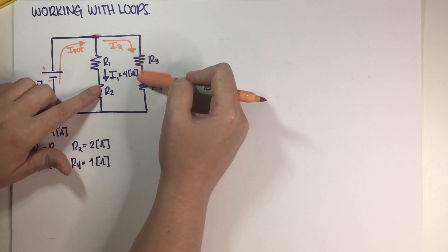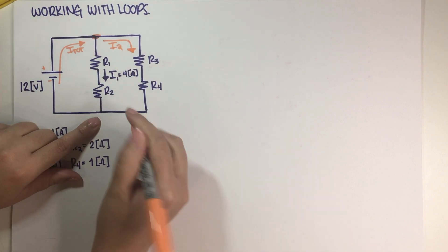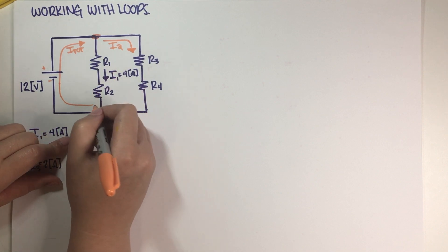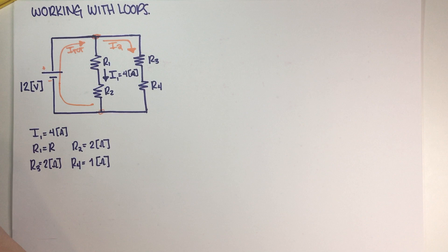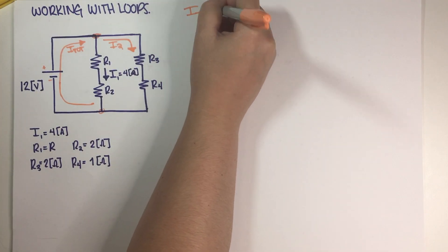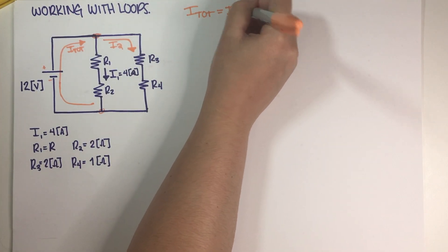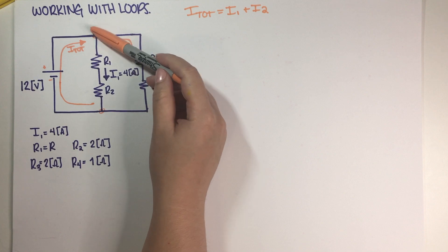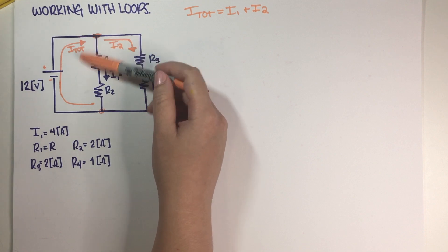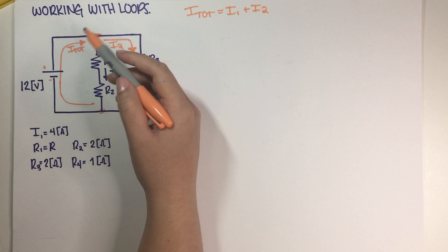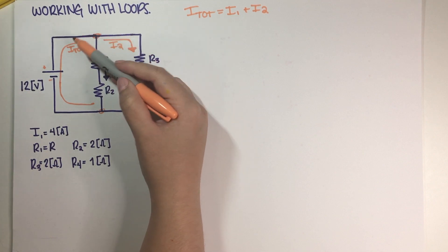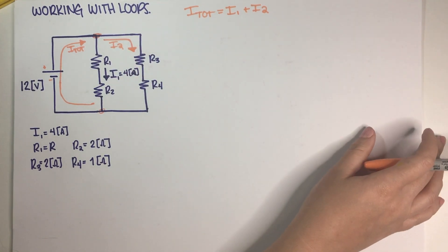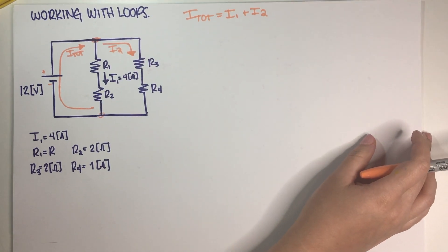Once these currents go down their respective paths they are gonna recombine at the junction and become I_total again. So I_total is equal to I1 plus I2 because we need continuity at every junction — we apply the fluid continuity equation: what goes in must go out. What goes in is I_total and what goes out is I1 plus I2. That's the continuity equation at the junction.